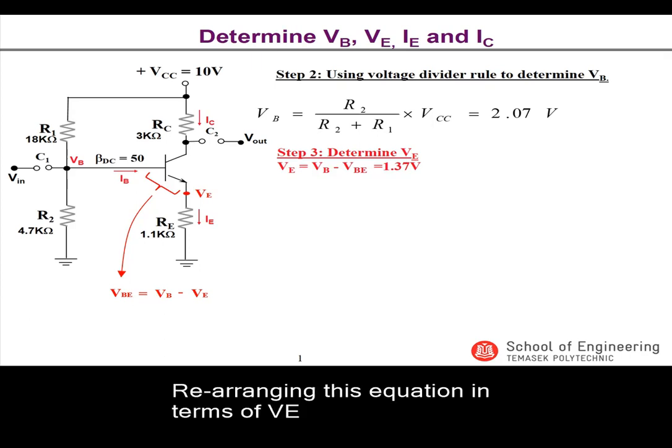Rearranging this equation in terms of VE will then give VE equal to VB minus VBE to give a value of 1.37 volts.